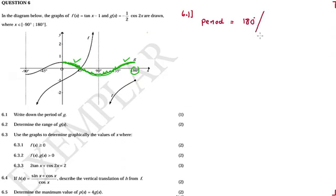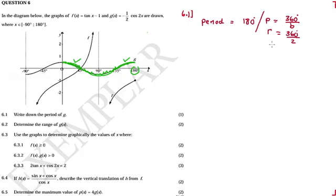So the period for G is equal to 180 degrees. Alternatively, using algebra: the period equals 360 divided by B, where B is the coefficient of x. In this case B is 2, so 360 divided by 2 equals 180 degrees. So the period is 180 degrees. You can either read it off the graph or calculate it algebraically.